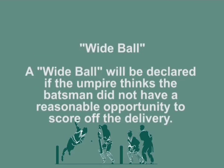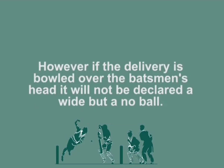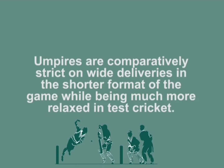A wide ball will be declared if the umpire thinks that the batsman did not have a reasonable opportunity to score off the delivery. However, if the delivery is bowled over the batsman's head, it will not be declared a wide but a no ball. Umpires are comparatively strict on wide deliveries in the shorter format of the game, while they are much more relaxed in test cricket.